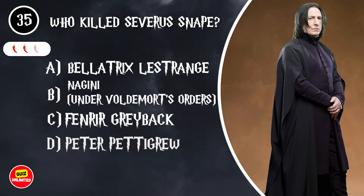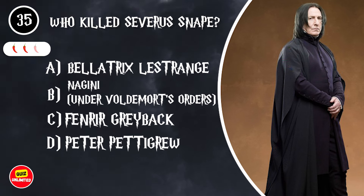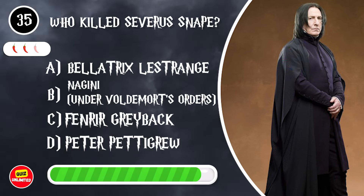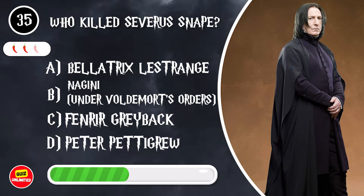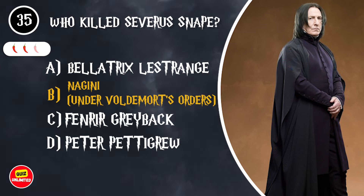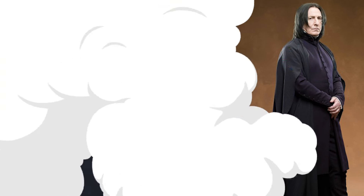Who killed Severus Snape? A. Bellatrix Lestrange. B. Nagini, under Voldemort's orders. C. Fenrir Greyback. D. Peter Pettigrew. It's B. Nagini, under Voldemort's orders.